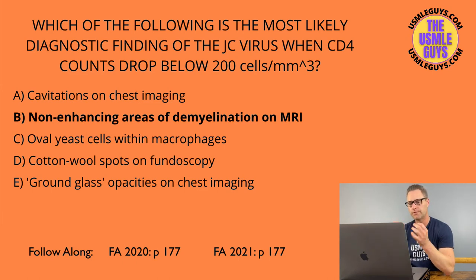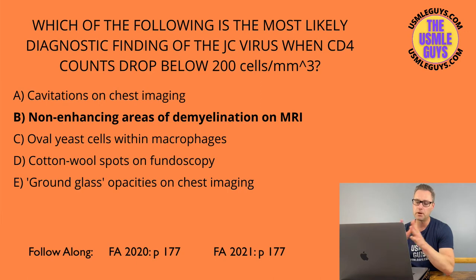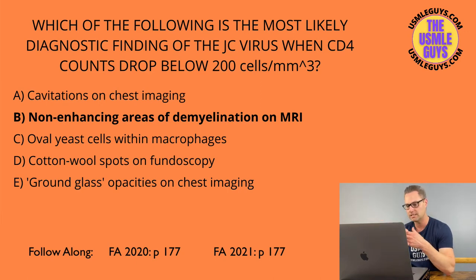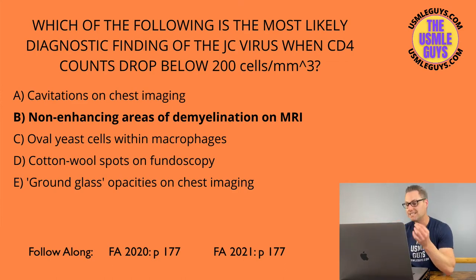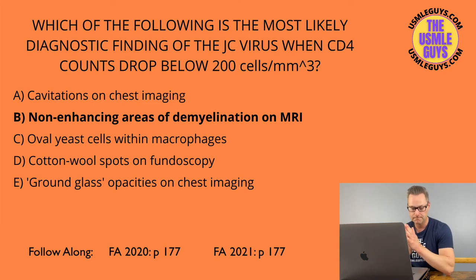Histoplasma capsulatum presents with a bunch of nonspecific findings like fever, weight loss, fatigue, dyspnea, cough, nausea, vomiting, and diarrhea — not very specific. But on microscopy, look for oval yeast cells found within macrophages.